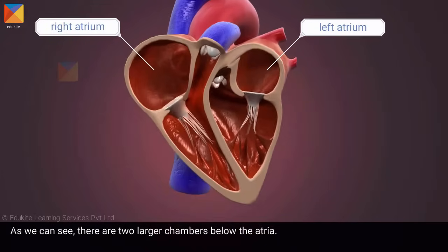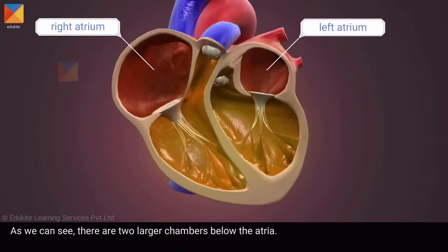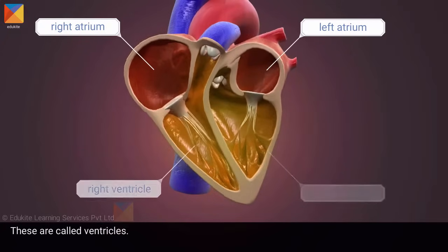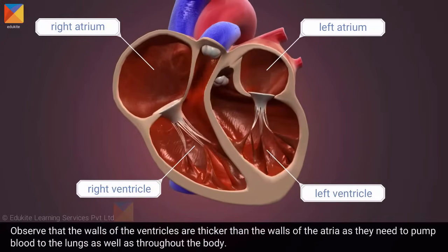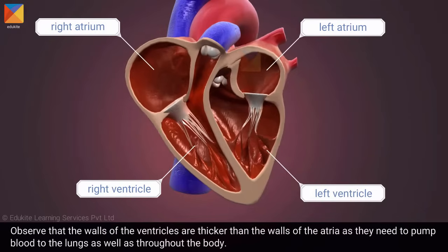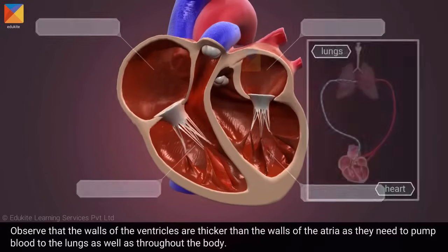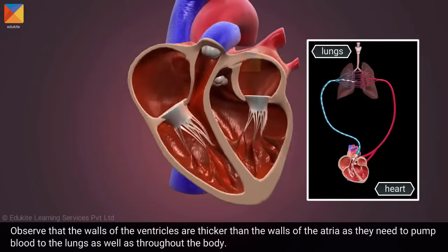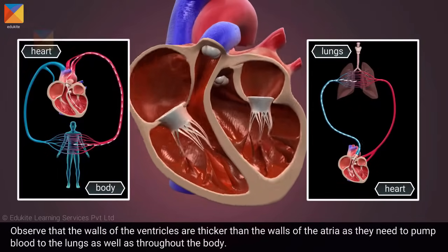As we can see, there are two larger chambers below the atria. These are called ventricles. Observe that the walls of the ventricles are thicker than the walls of the atria, as they need to pump blood to the lungs as well as throughout the body.